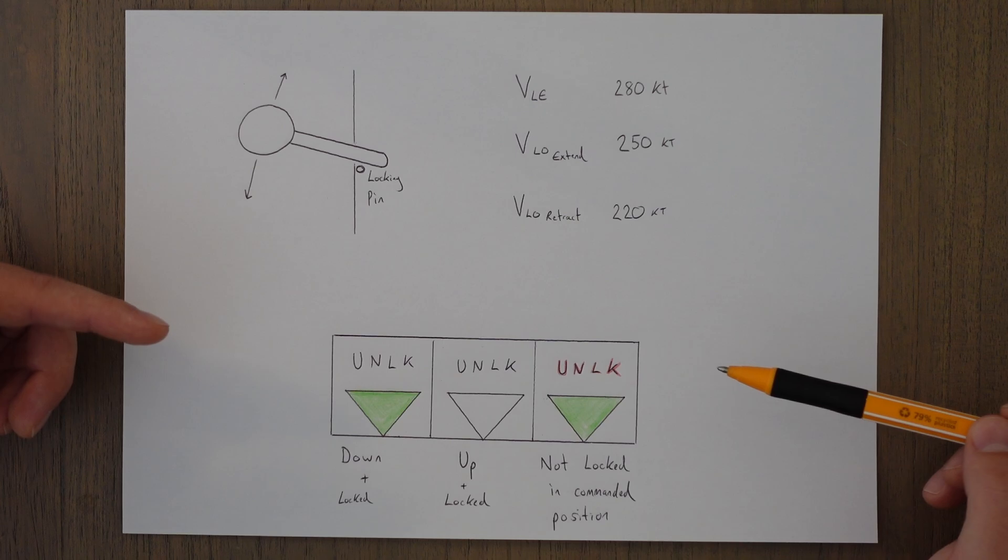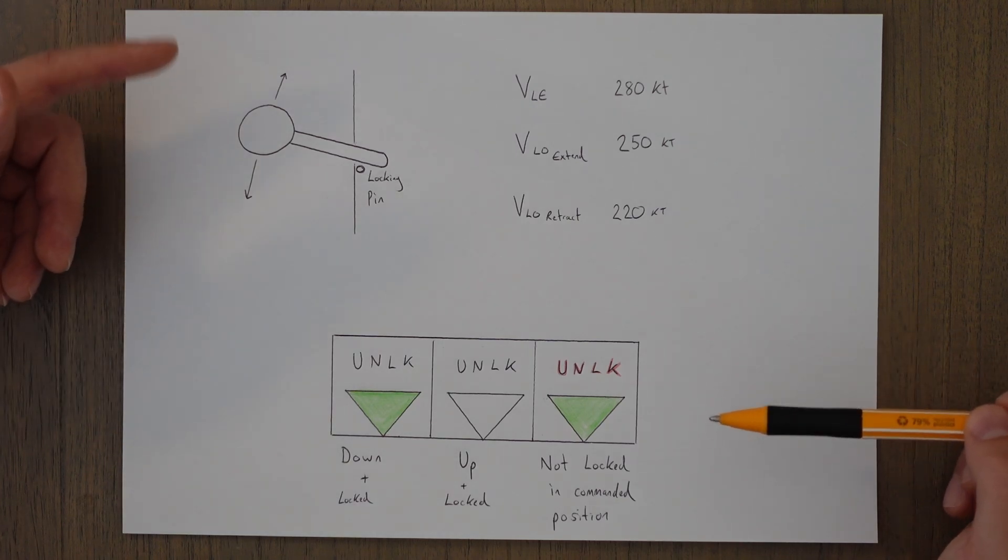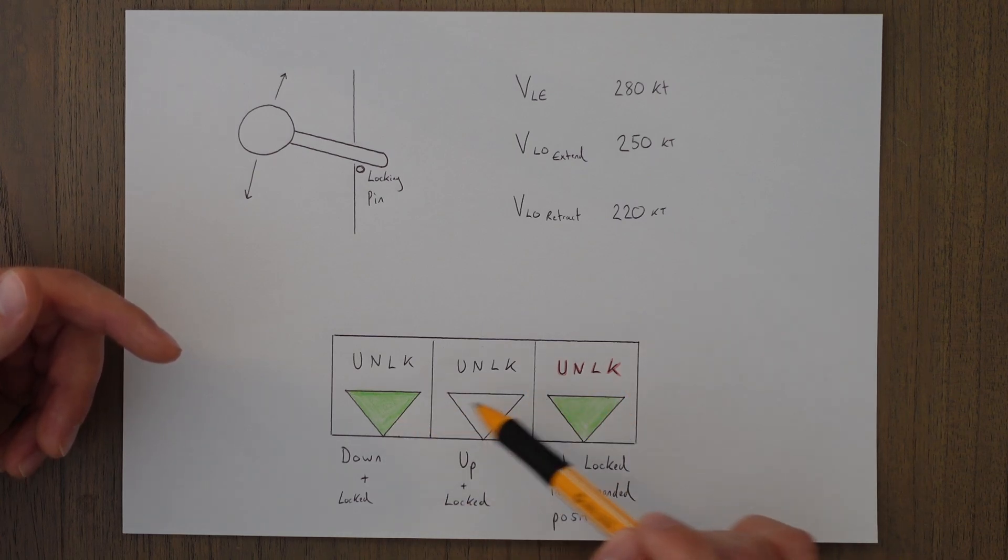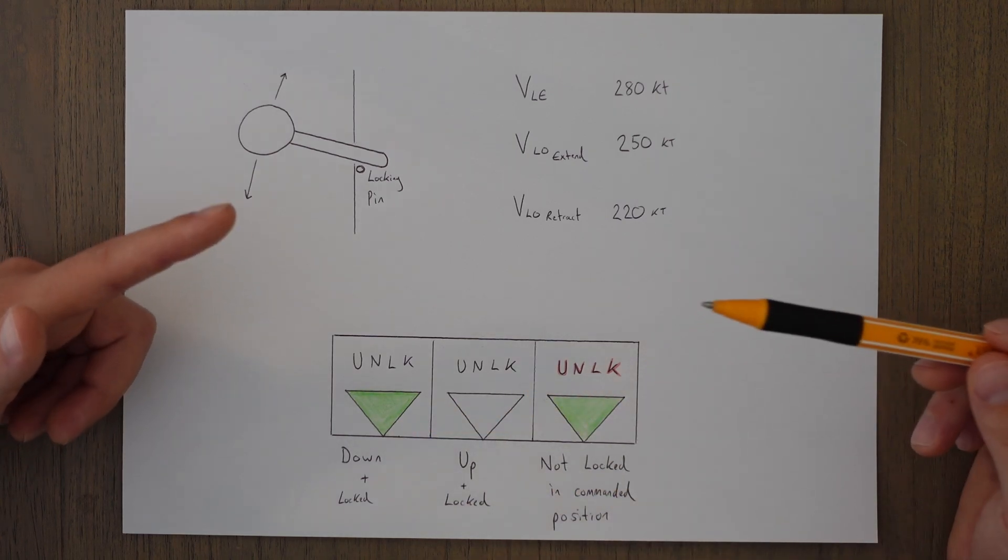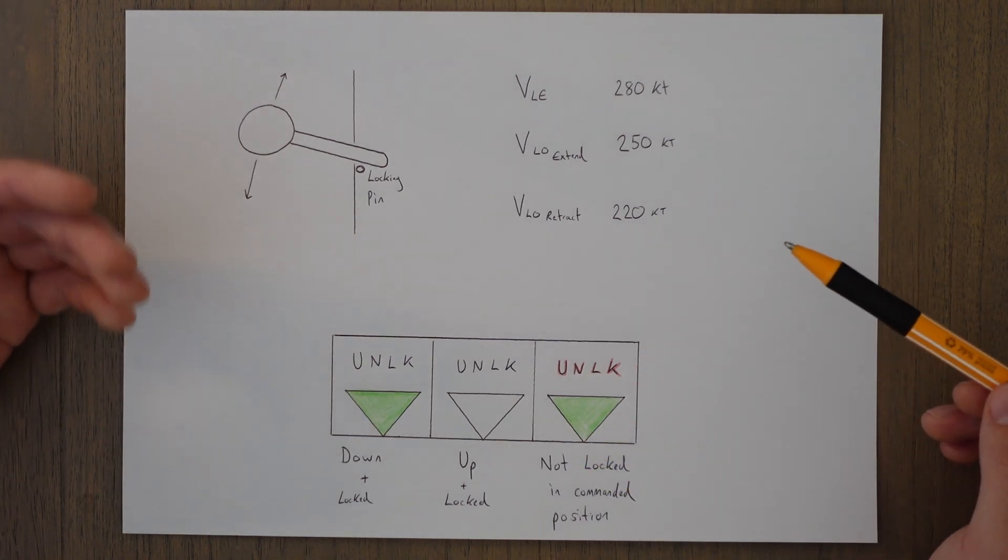The same would happen on retracting the gear. Three greens would be showing initially, then we command the gear up, and the gear unlock lights—the red ones—would come on until all the lights go out. So the red lights sort of indicate this transitional period between the two states.